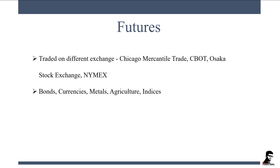Bonds include products like the 10-year treasury bond and 30-year treasury bond. Currencies include pairs like the euro, AUD (Australian dollar), New Zealand dollar, Canadian dollar, and others. Metals include gold, silver, platinum, and palladium. Agriculture includes wheat, corn, and soybeans. Indices include the S&P 500, Dow Jones Industrial Average, Nasdaq 100, FTSE 100, and Nikkei.